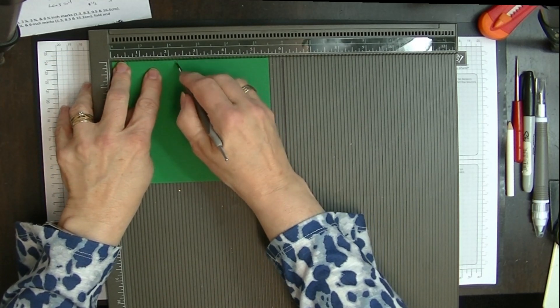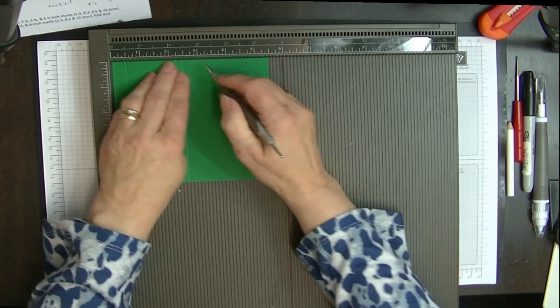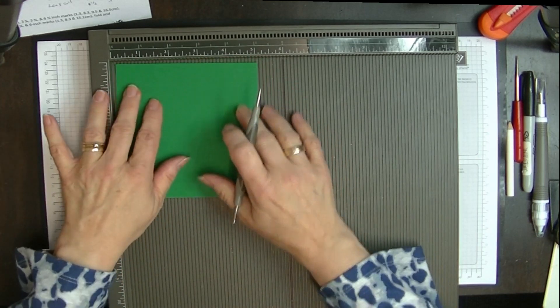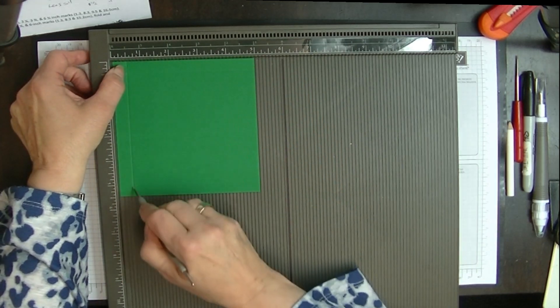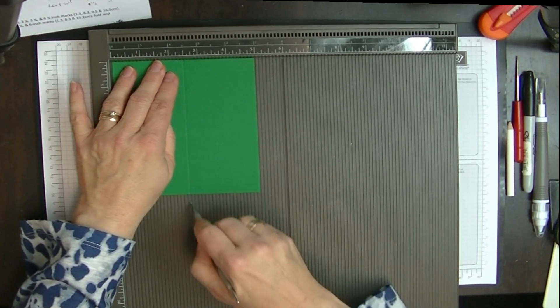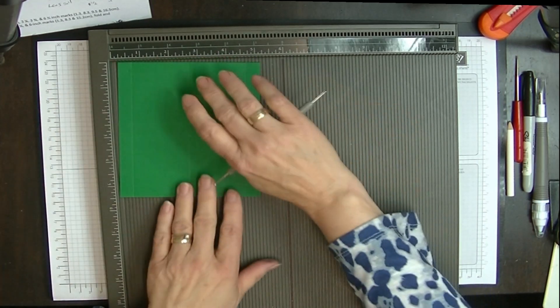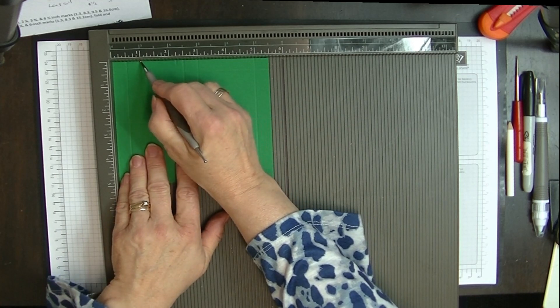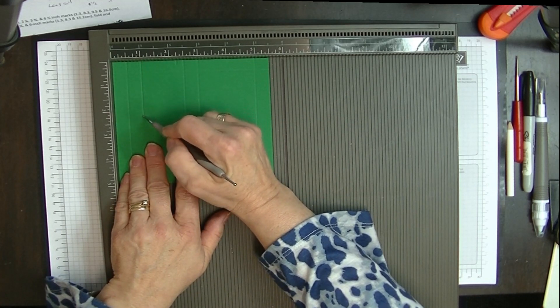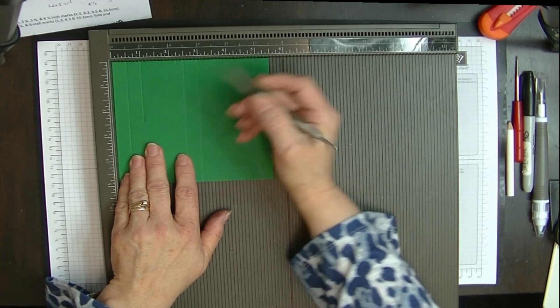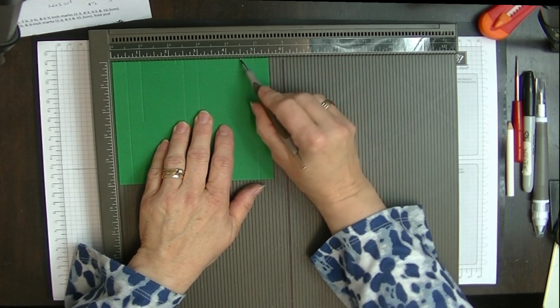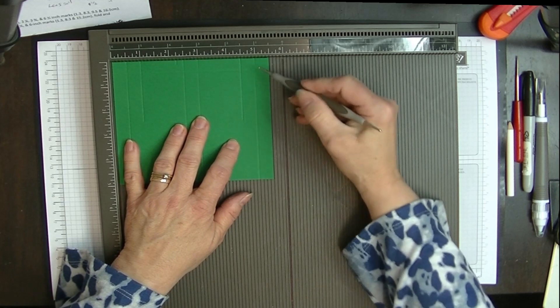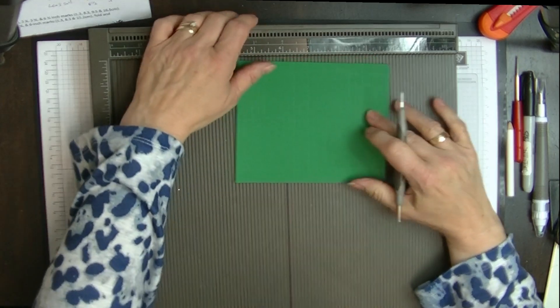We're going to score this at a half an inch, two and a half inches, three inches, and five inches. We're going to turn on to the short side. And we're going to score this at a half an inch, two and a half inches, and four and a half inches. We're then going to turn this back to the long side. And then at the one inch mark, we're going to score down to the two and a half inch mark, the second score line. And then we're going to do the same at the other end of the four and a half inch mark. We're going to score down to the two and a half inch score line or the second score line. And that's all that scoring done.